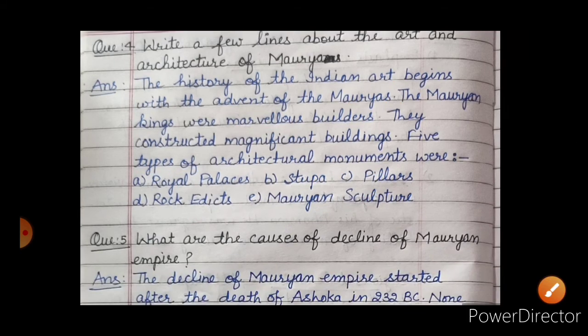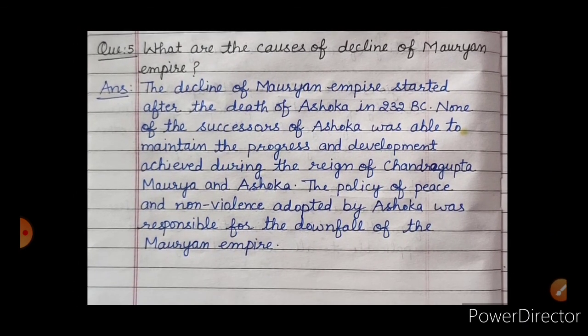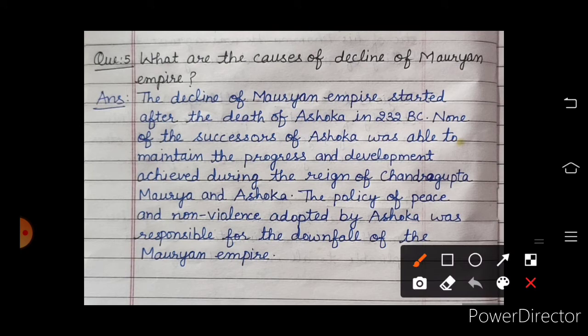Now moving to our fifth question: what are the causes of the decline of the Mauryan Empire? Decline means patan hona, khatam hona. Moria Samrajya ka patan kis wajah se hua — kya kya karan thi jinki wajah se Moria Samrajya khatam ho gaya? The answer is: